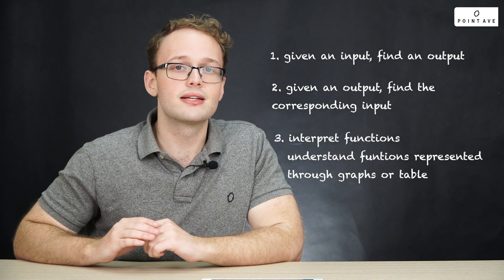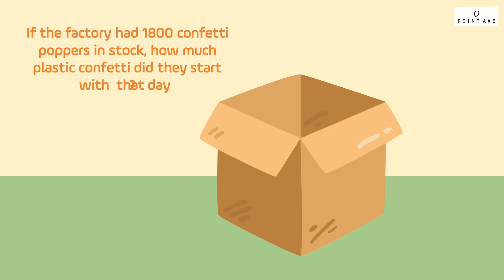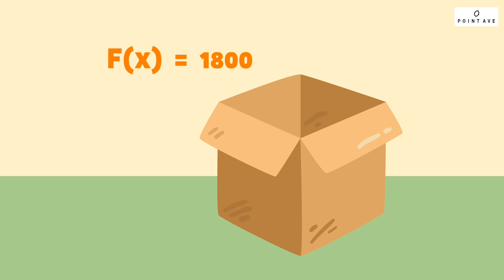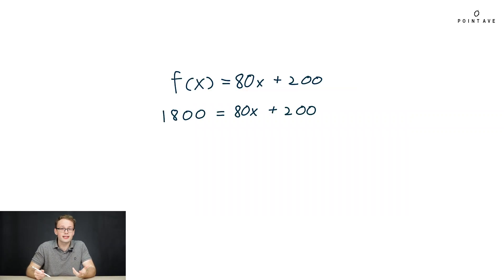So now let's look at an example of that second type. Given an output, find an input. Suppose we were asked if the factory had 1800 confetti poppers in stock, how much plastic confetti did they start with that day? Well, 1800 is the number of confetti poppers, not pounds of plastic. This is the value of f of x, and we were asked to find x. So how do we do so? Well, to do so, we simply plug into our function. Now we're given in this case that f of x equals 1800, so we replace f of x with 1800, and then we have an equation of x that we can solve. We do so subtracting 200, dividing 80, and then we get simply x equals 200.